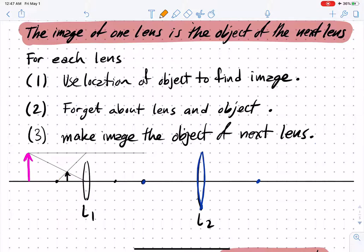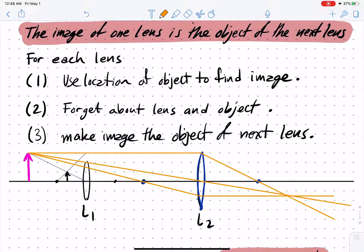Now we can construct as we always do. Take the ray coming in parallel and follow it out. We could take the ray through the center, or maybe more useful, the ray that goes through there.